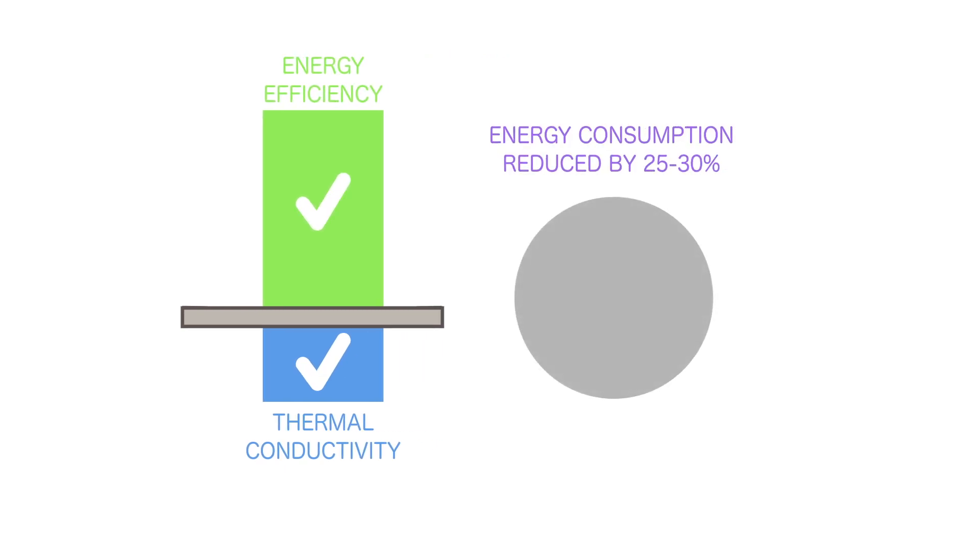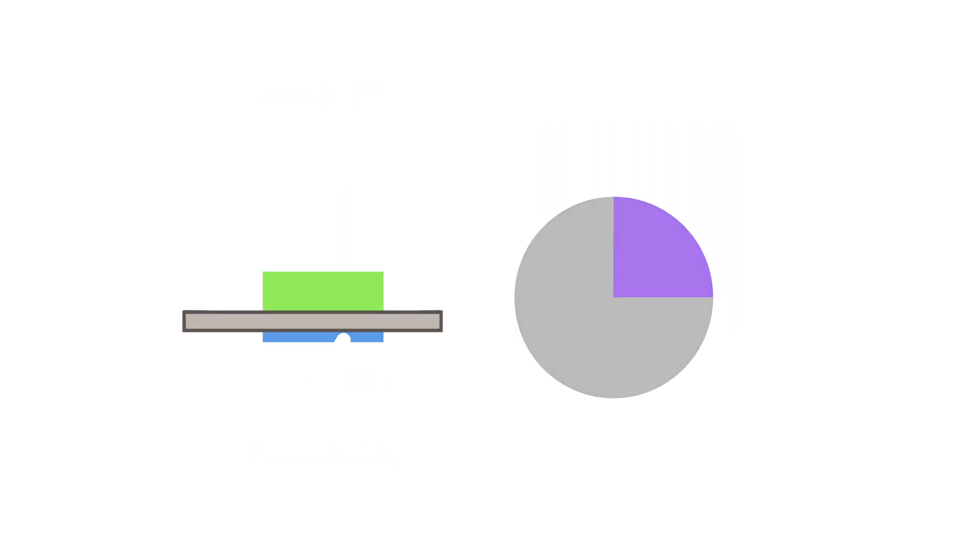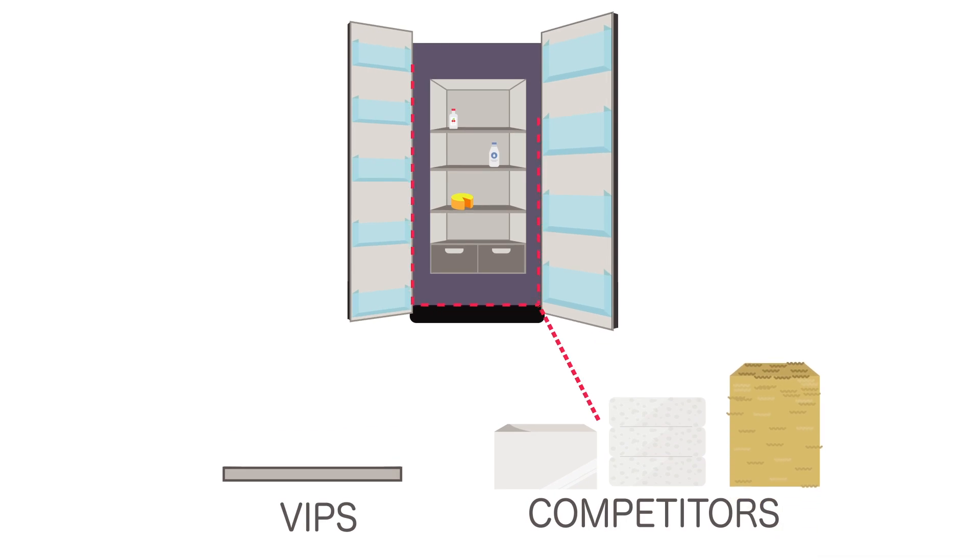VIPs have an extremely low thermal conductivity and are a remarkable solution for increasing the energy efficiency of appliances by reducing energy consumption by 25 to 30 percent.